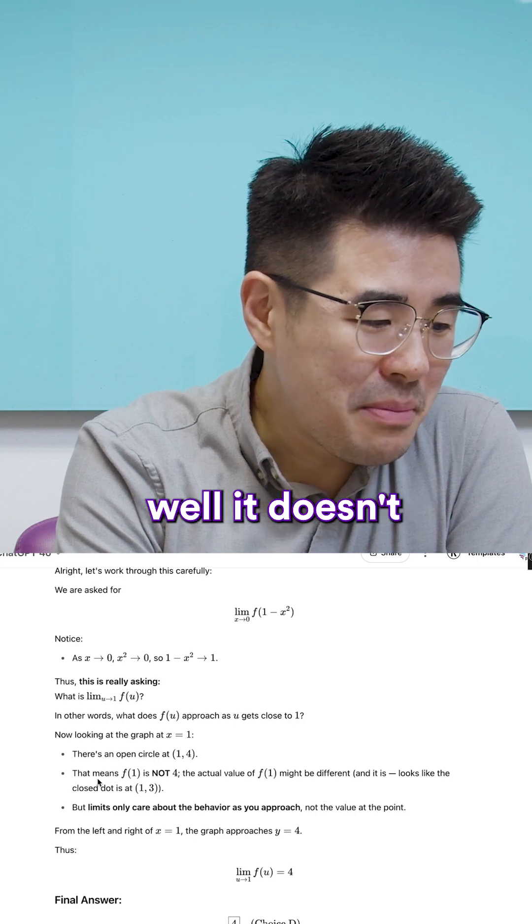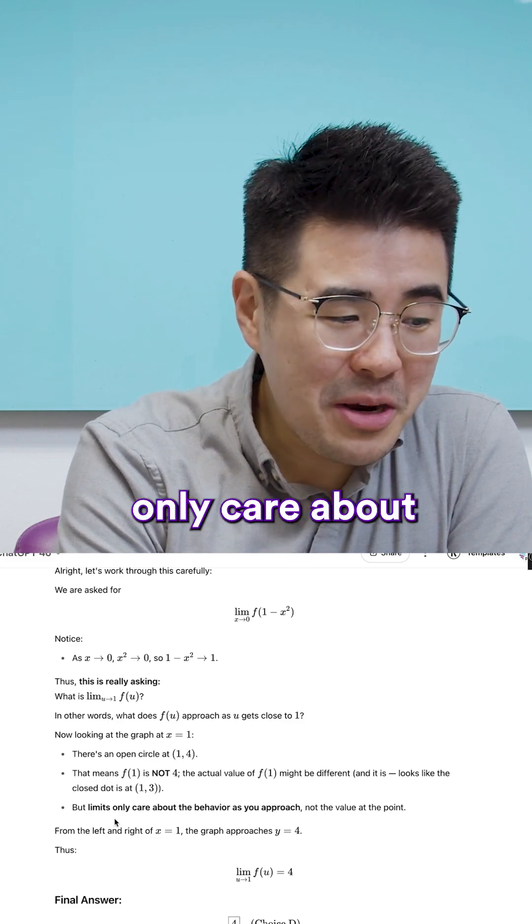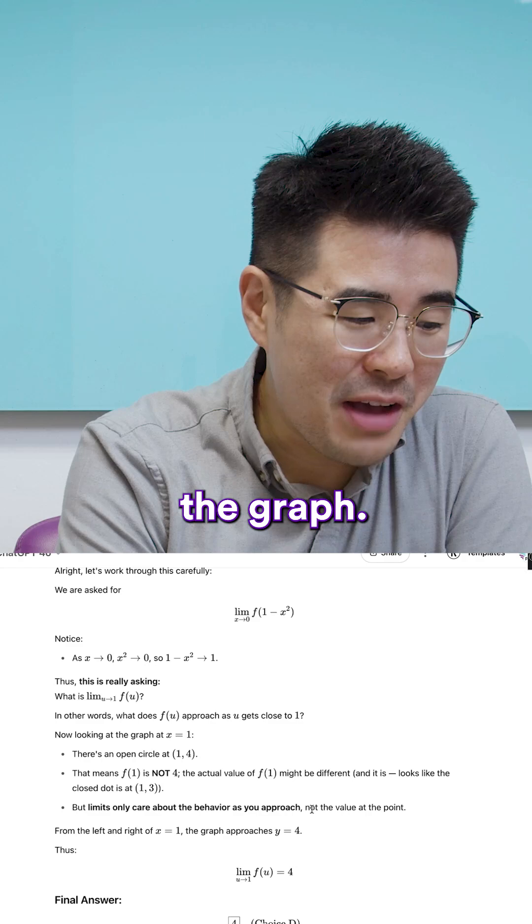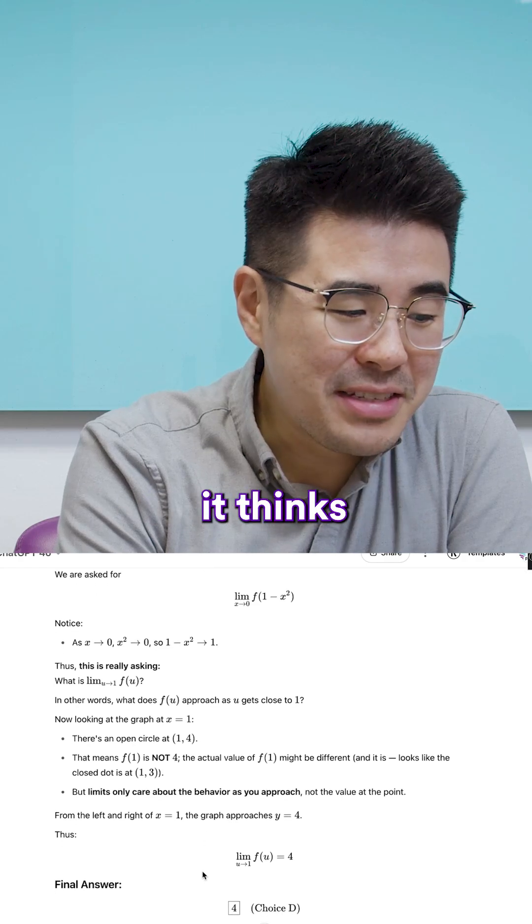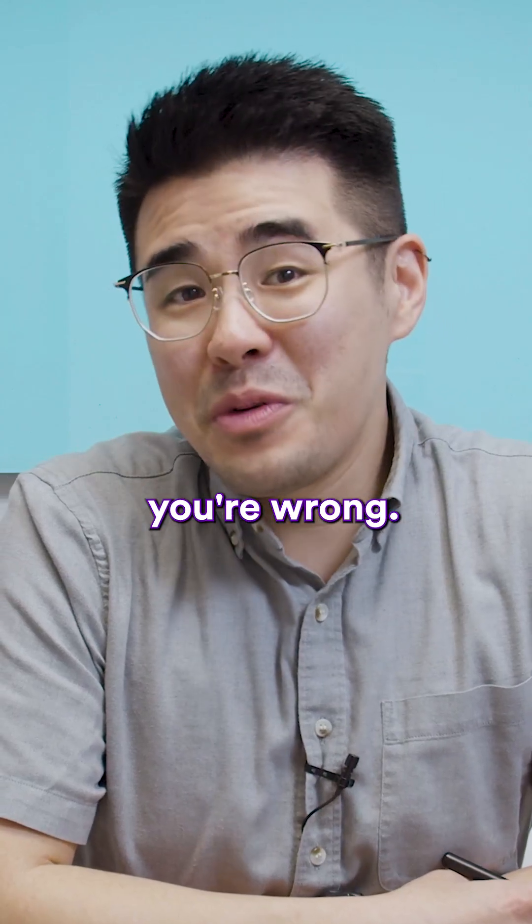And then it says, well it doesn't matter if there's an open circle. The limits only care about the behavior as you approach the graph. So it says that it thinks the correct answer is d. If you got d, you're wrong.